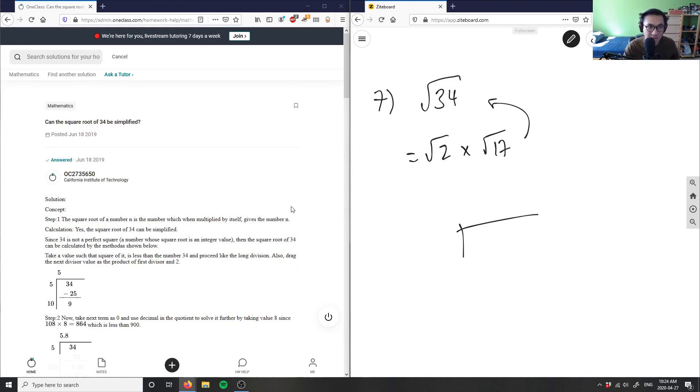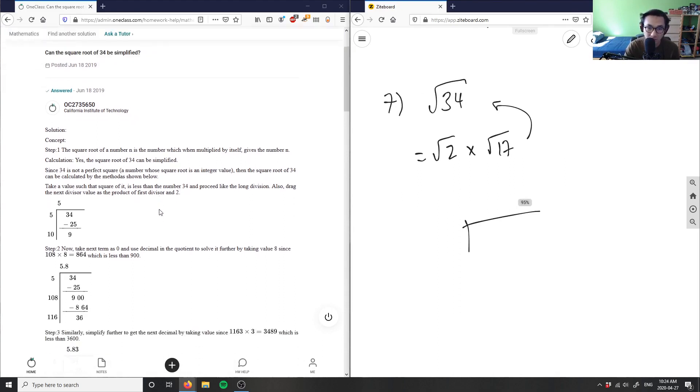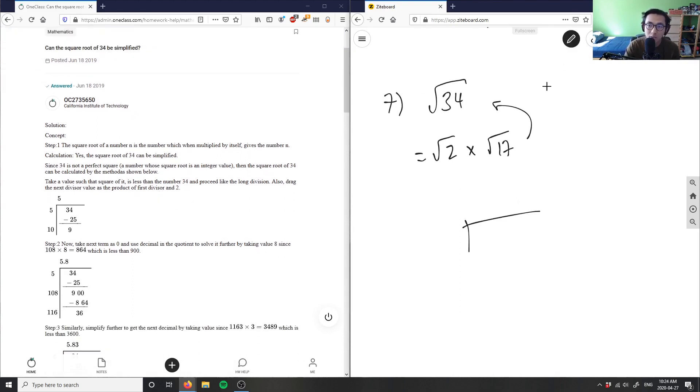But it was asking us can the square root of 34 be simplified. In this case I would answer no because we can't simplify this radical. We're not breaking it down to an integer and a radical, but we're actually approximating what this square root is. Let me walk through the solution. They're using the concept of long division, so they have 5 and 34 here.